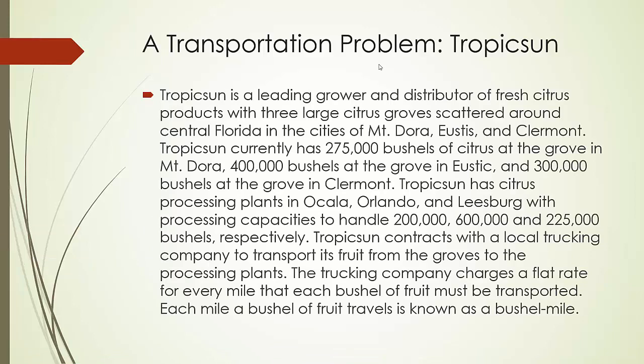Tropic Sun is a leading grower and distributor of fresh citrus products with three large citrus groves scattered around central Florida in the cities of Mount Dora, Eustace, and Claremont. Tropic Sun currently has 275,000 bushels of citrus at the grove in Mount Dora, 400,000 bushels at the grove in Eustace, and 300,000 bushels at the grove in Claremont. Tropic Sun has citrus processing plants in Ocala, Orlando, and Leesburg with processing capacities to handle 200,000, 600,000, and 225,000 bushels respectively.